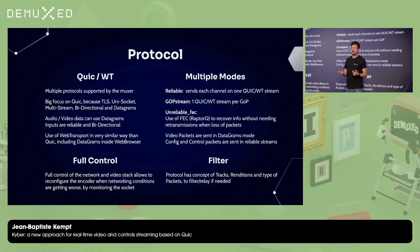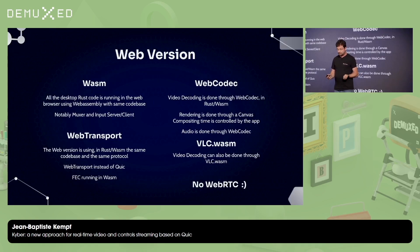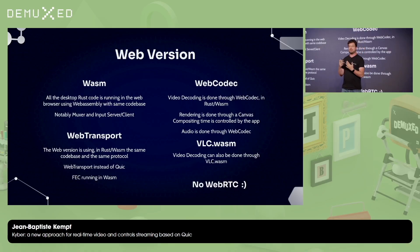Also, because we have full control of the protocol, we can, for example, detect the jitter on the network sockets, realize that the jitter is increasing, and send a message to the encoder to go down in bitrate. The web version is really cool because it's actually the same code as the desktop version — because it's Rust — so everything is compiled to WebAssembly, and the rendering is done with our own rendering, either through vlc.wasm or through WebCodec and a custom canvas output. And of course, no WebRTC was used in that demo.